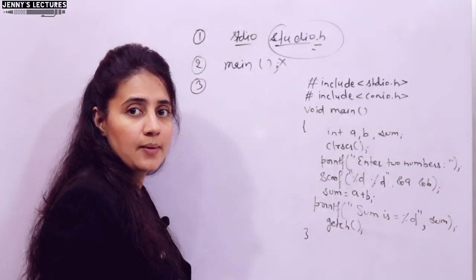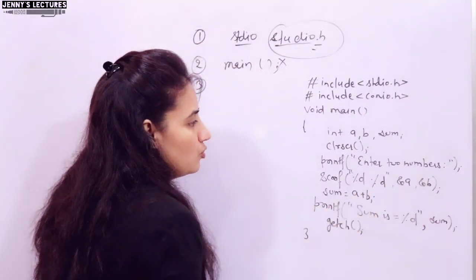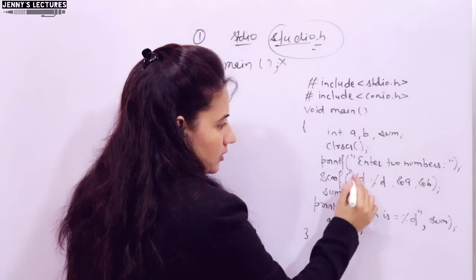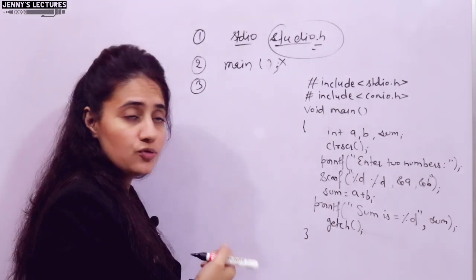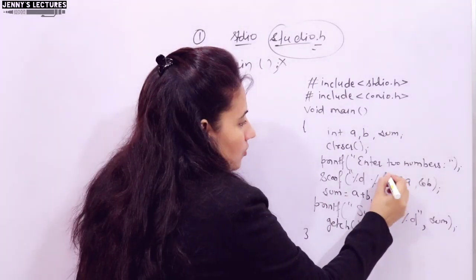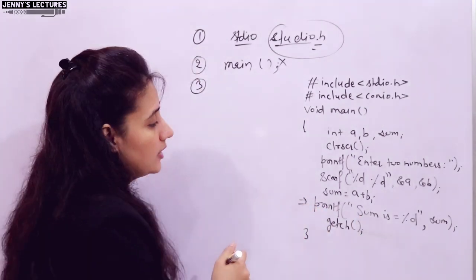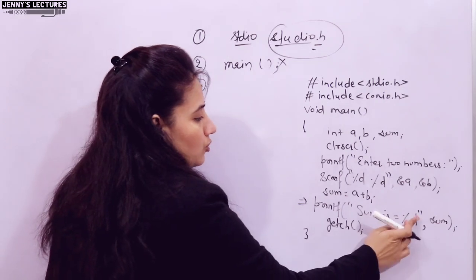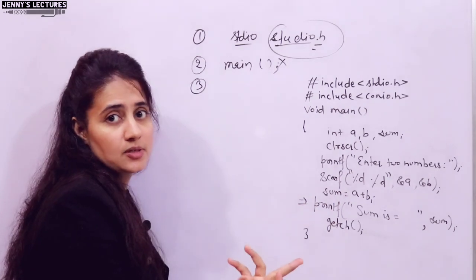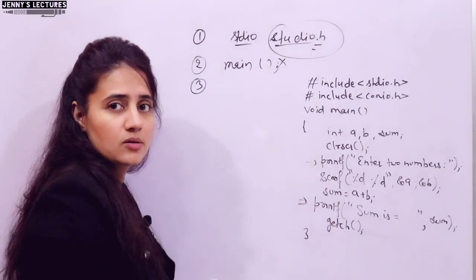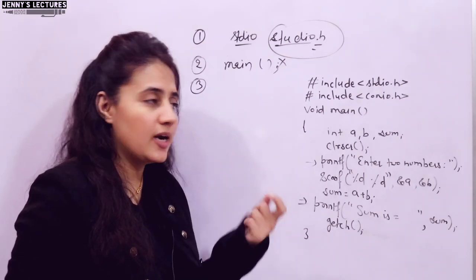Another mistake is forgetting to put a comma after the closing quotation mark in scanf or printf. This will give a compile-time syntax error. Also, sometimes students forget to close the quotation mark — that gives a logical error. In printf, if you want to print a simple message like 'enter two numbers', you don't need a format specifier.